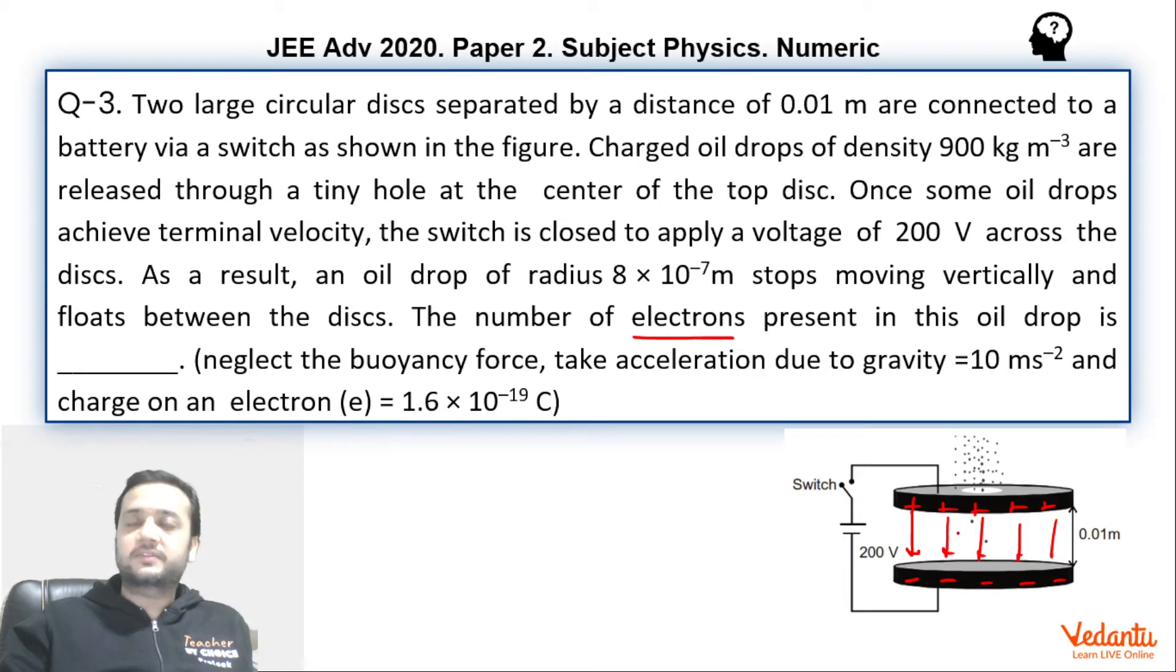Hence, the viscous force also decreases. At equilibrium, the viscous force vanishes, and all we are left with is gravity and electrostatic force, which balance each other. Since the charge is negative, the force on the electron must have been in the upward direction, which is quite obvious. It's very easy. We just have to balance the gravitational force with the electrostatic force.